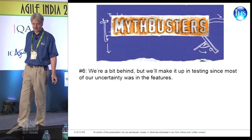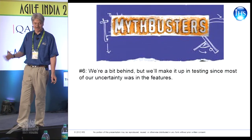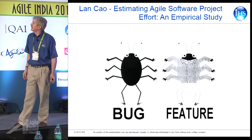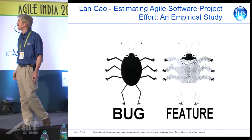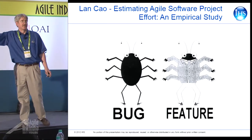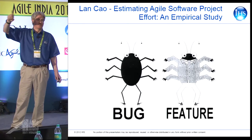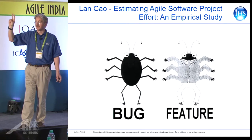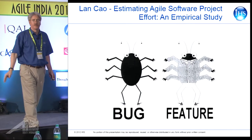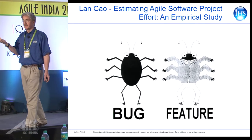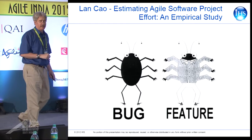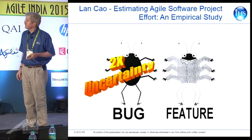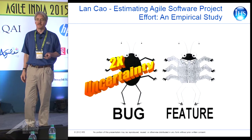Myth six: we're a bit behind but we'll make it up in testing since most of our uncertainty was in the features. There's a paper by Lancao, 'Estimating Software Project Effort: an Empirical Study.' I love this article for three reasons: first, she references my work; second, she comes to the same conclusions — the estimation process ends up with a log-normal distribution; third, I learned something new because she had data for both features and bugs, and what the data showed is that the uncertainty in a defect is about twice as great as the uncertainty of a feature.